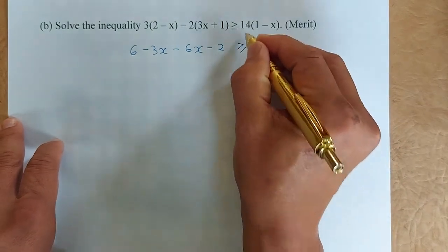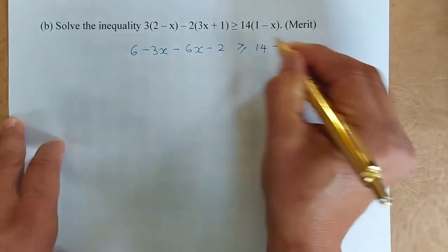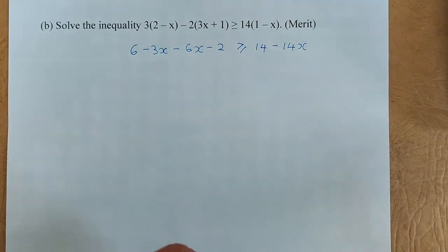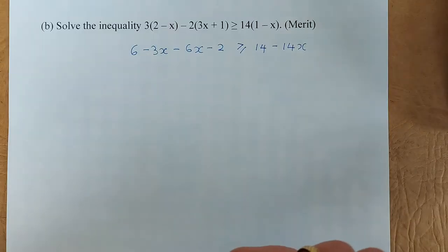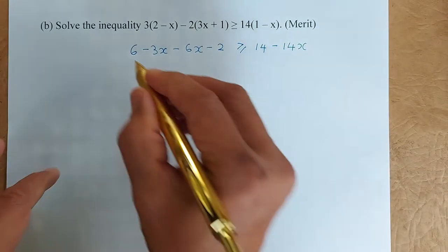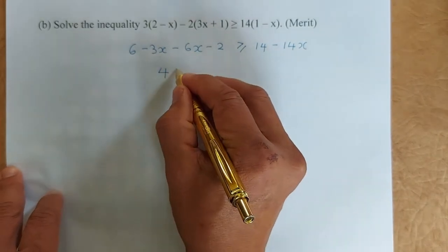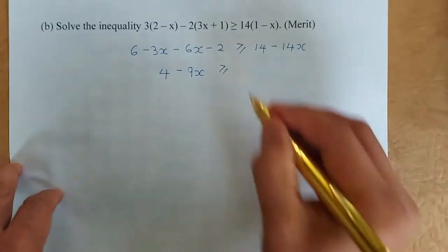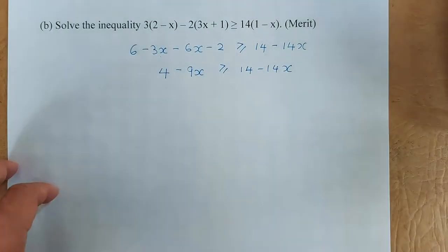And on the right hand side, when you expand: 14 times 1 is 14, minus 14x, because 14 times negative x is negative 14x. Now we simplify like terms: 6 minus 2 is 4, minus 3x minus 6x is minus 9x. The inequality symbol remains the same, and the right side is 14 minus 14x.